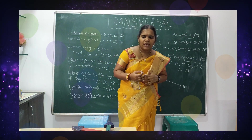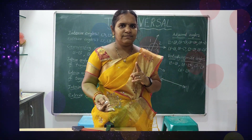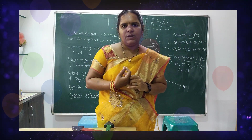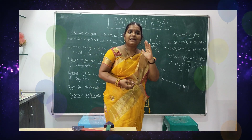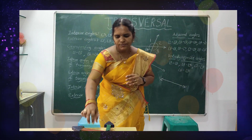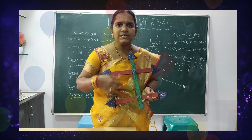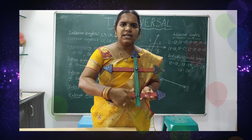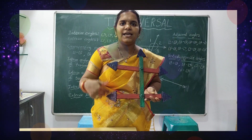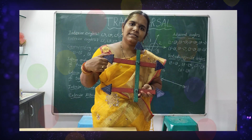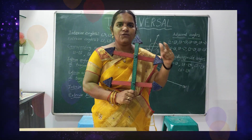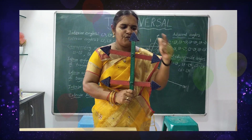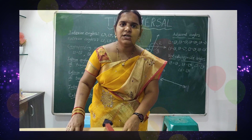If one line is intersecting other lines, we need to give it a name. If a line intersects two or more lines, that line is called the transversal of those lines. A line intersects two lines at different points — it is now the transversal of these two lines.